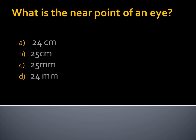Next question: What is the near point of an eye? Option A, 24 cm. Option B, 25 cm. Option C, 25 mm. Option D, 24 mm. The near point of an eye is the minimum distance at which our eye can clearly see an object — that is 25 cm.